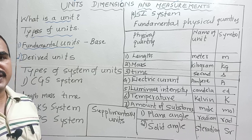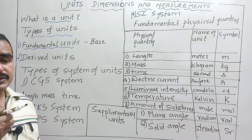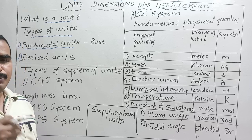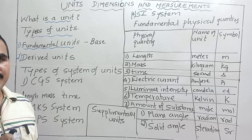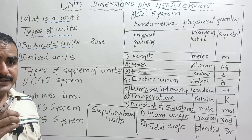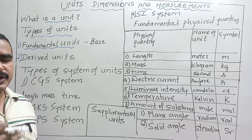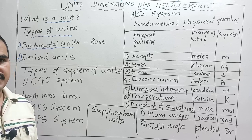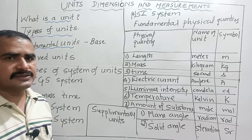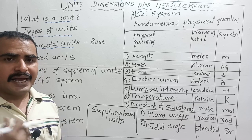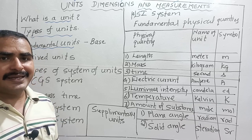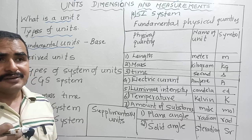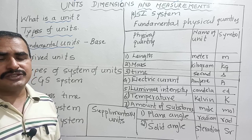You can measure length using a meter scale, time using a watch or clock, weight using a weighing balance, and temperature using a thermometer. Any quantity measurable by an instrument is called a physical quantity. There are also non-physical quantities such as human behaviors — anger, hunger, pain, affection — which have no proper device to measure them.